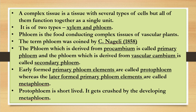Vascular cambium is radially elongated and arranged layer-wise in the vascular bundle. The cambium cells present in the vascular bundle are said to be vascular cambium. Primary phloem elements formed during the early developmental stage are represented as protophloem, whereas primary phloem elements formed during the later stage of development are said to be metaphloem.